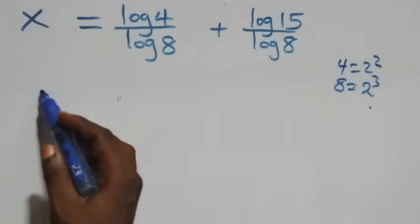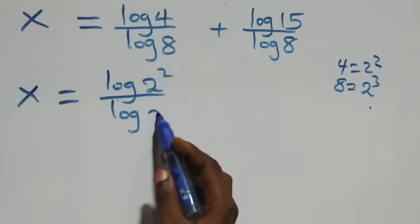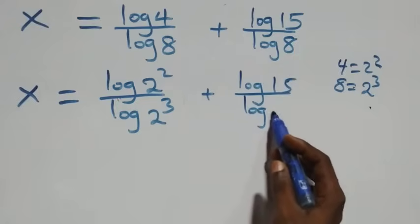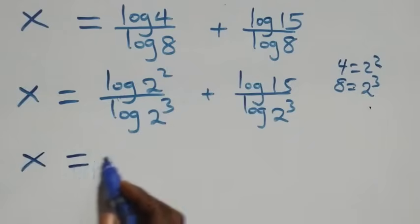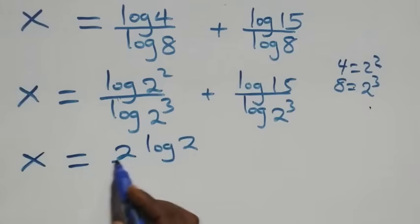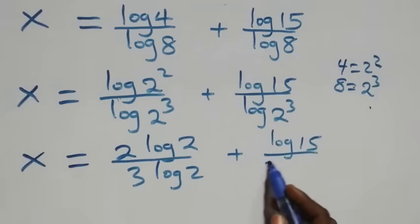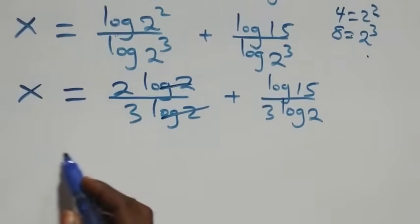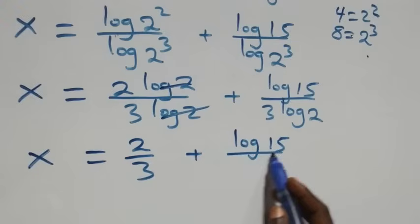Here we have log fifteen on one part. For the first fraction, we can express four as two raised to power two, and eight as two raised to power three. When we apply the power rule, two comes down: we have x equals two log two over three log two, plus log fifteen over three log two. The log twos cancel each other and we are left with two over three, so x now equals two over three plus log fifteen over three log two.